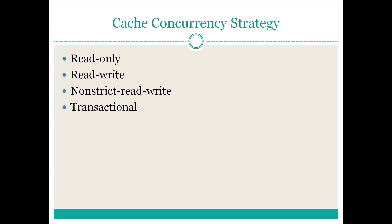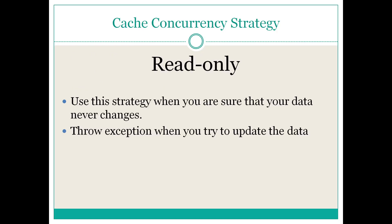In order to use Hibernate second-level cache we have to define a cache concurrency strategy. There are four cache concurrency strategies: read-only, read-write, non-strict read-write, and transactional. Use the read-only cache concurrency strategy when you are sure that your data never changes. If you try to update the data using this strategy, Hibernate will throw an exception.